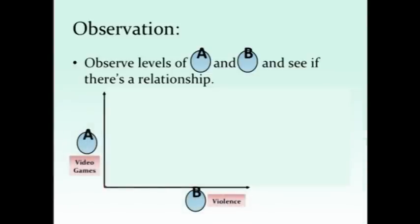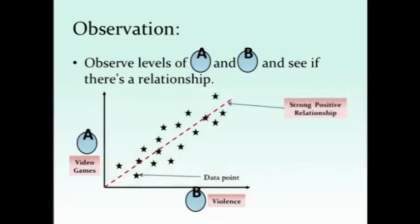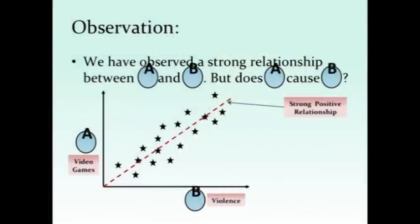If we plot that graphically, that would look something like this. You have A on the left, you have B underneath. We collect data points concerning video games and violence, for example, to put our first point up. But in order to really understand the relationship between A and B, we need multiple data points. Once you have multiple data points, you can then plot a relationship between A and B, and see whether or not high levels of A are related to high levels of B. In this hypothetical scenario, we see that there is a strong positive relationship between our A and our B variable, which means that yes, we found that the more people play violent video games in particular, the more violent behavior they actually exhibit.